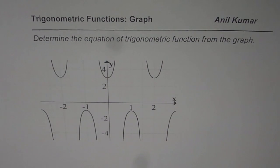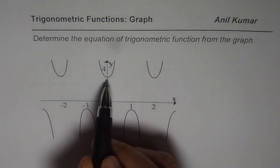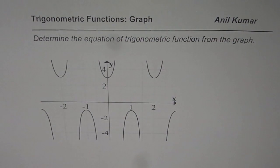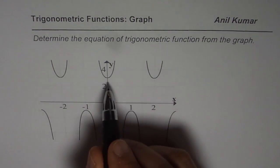If you carefully look at the graph it seems that the graph could be of secant or cosecant function. Now since it has a local minimum on the y-axis it is easier for us to write secant function. However we can write both secant and cosecant. So let me begin by writing equation with a secant function.